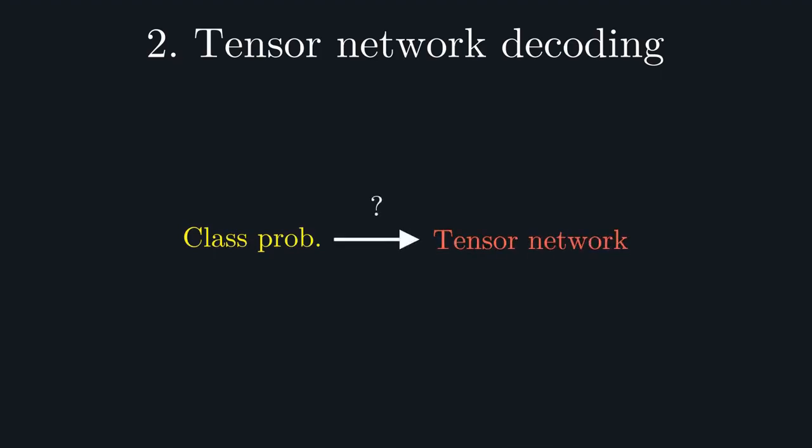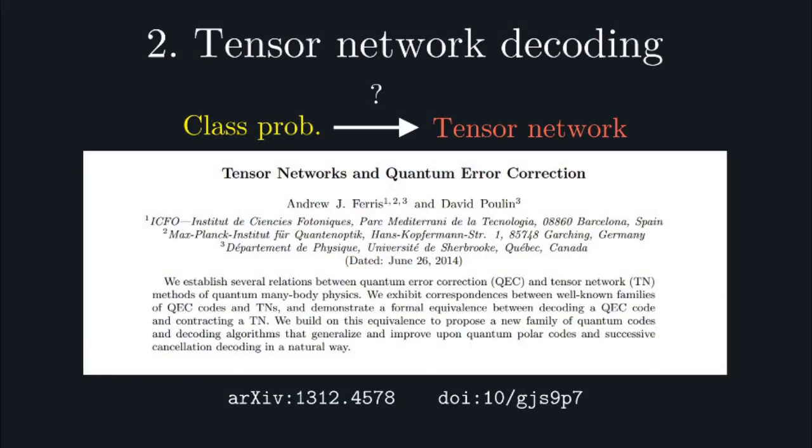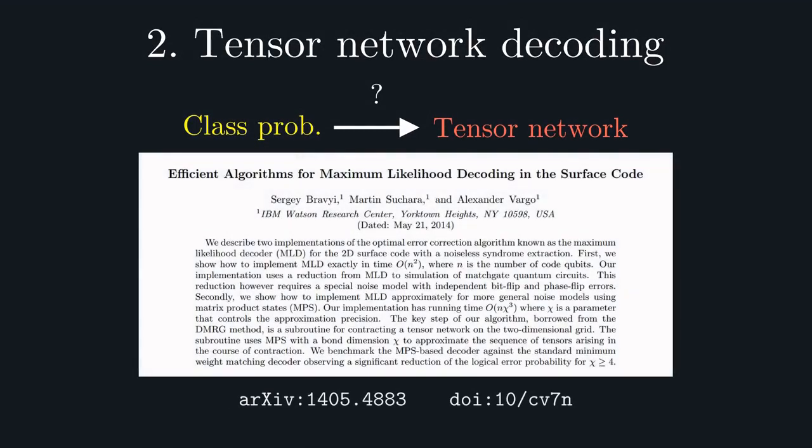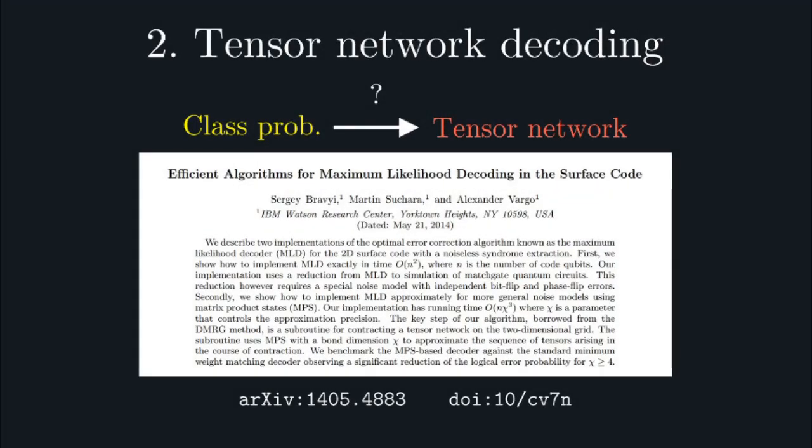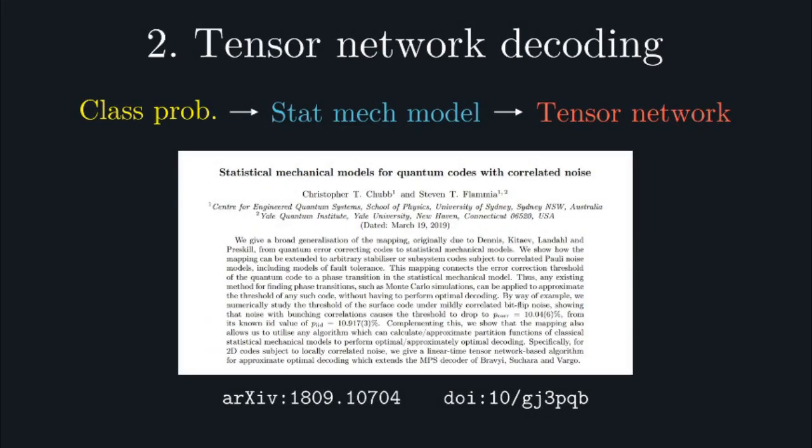The idea of a connection between quantum codes and tensor networks can be traced back as far as this 2013 paper by Ferris and Poulan. In 2014, Bravi, Suchar, and Vargo showed how such a connection could be leveraged for the purposes of maximum likelihood decoding. Their paper specifically focused on the surface code and only considered IID noise. More recently, in a 2018 paper with my PhD supervisor Steve Flamia, we were able to extend this connection.